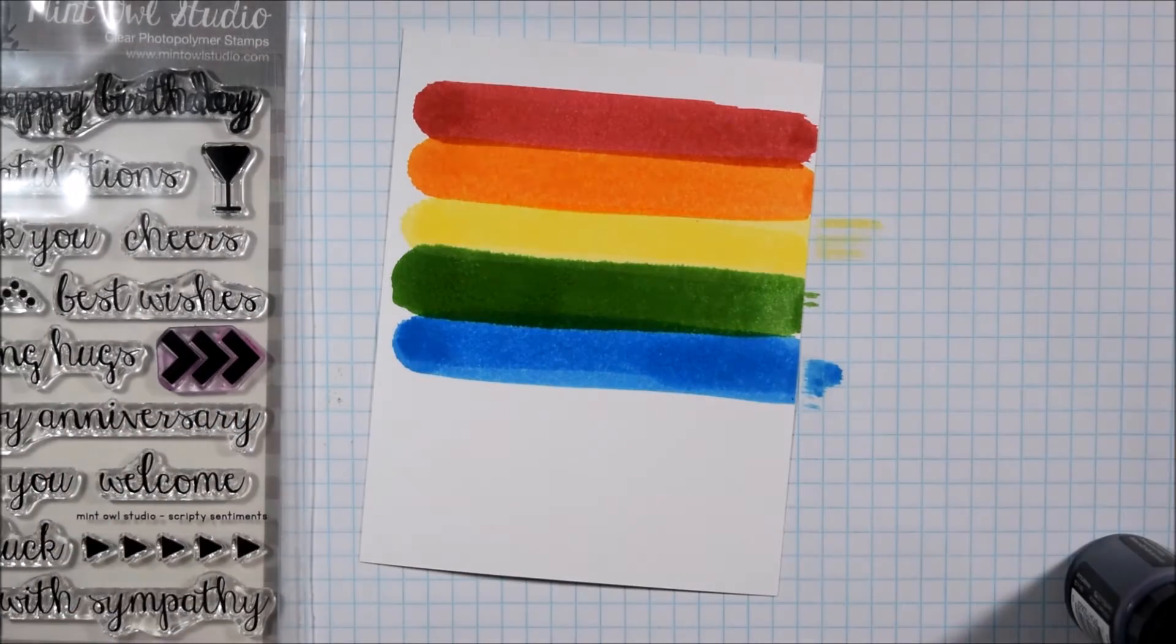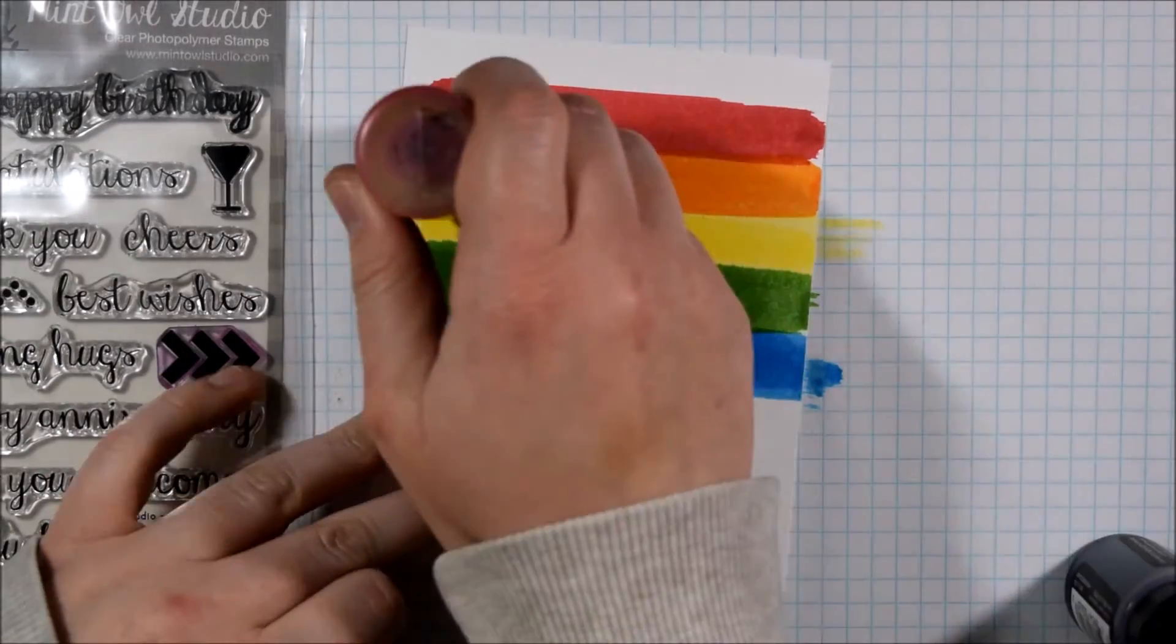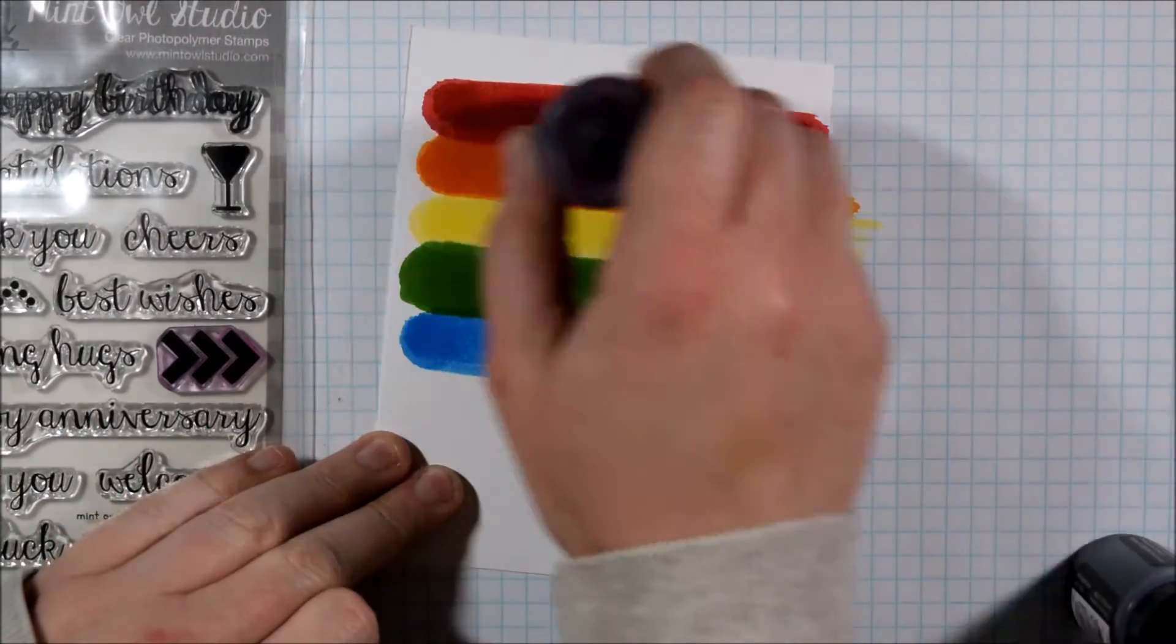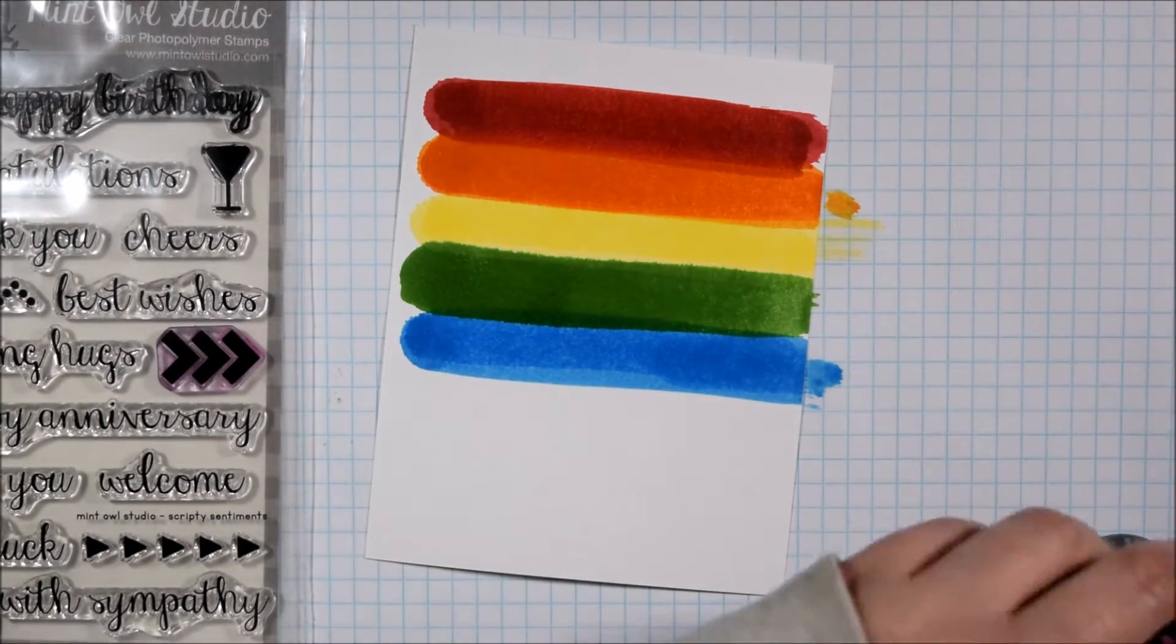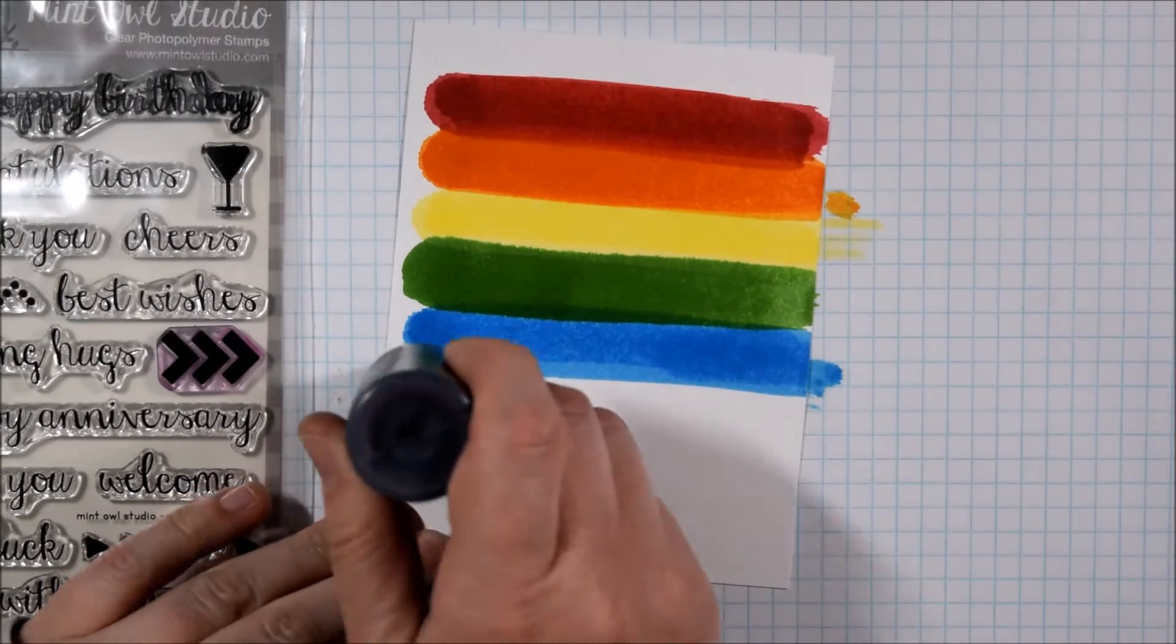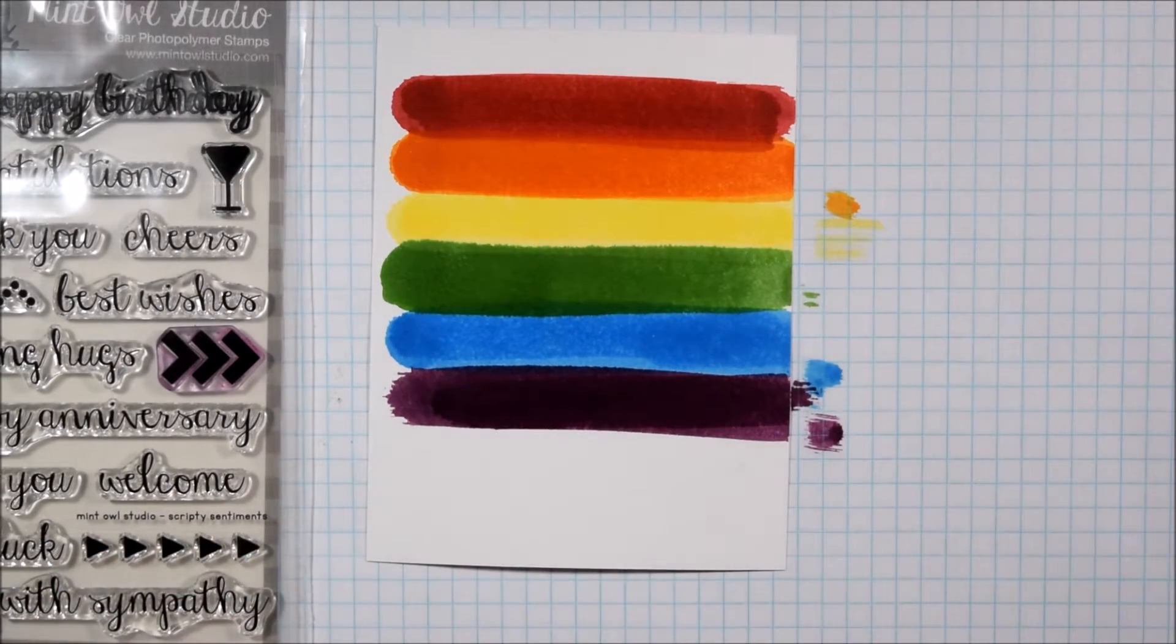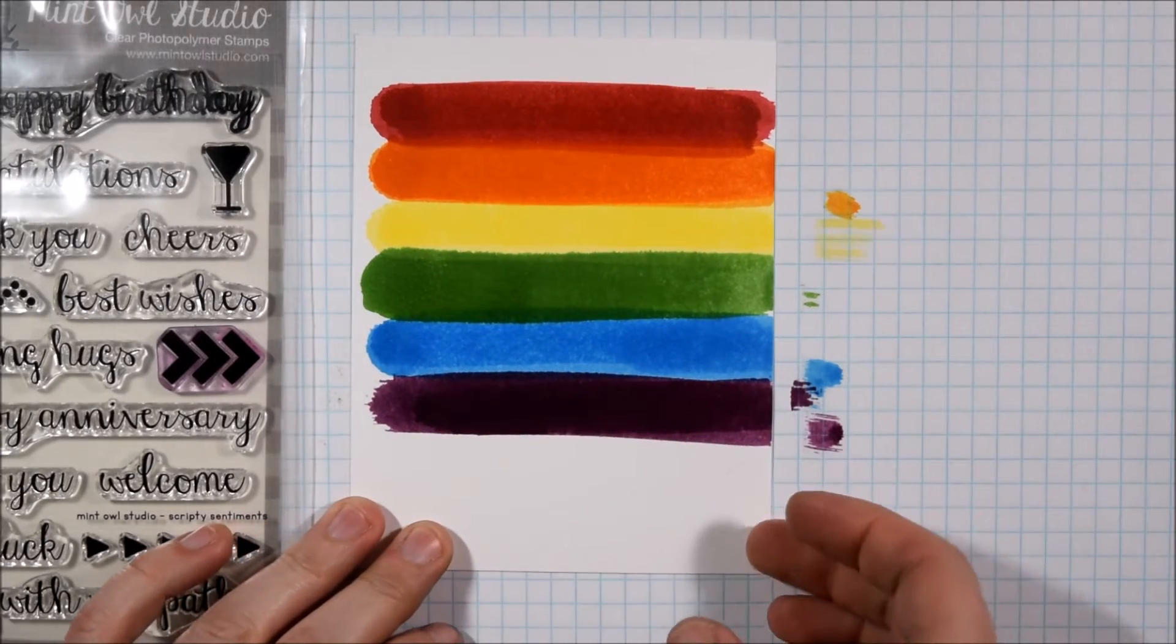But I'm just making a stripe of each rainbow color across the cardstock here and this is just regular cardstock, it's not watercolor cardstock which you could use because distress stains are quite wet, but there's no real technique to this, it's just a literal stripe across.